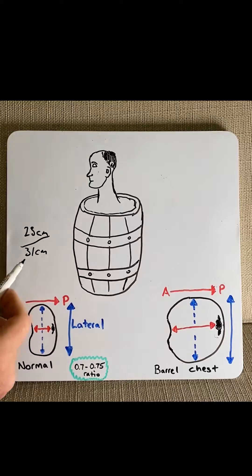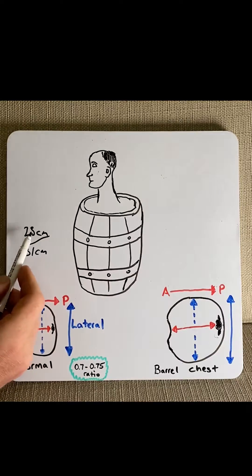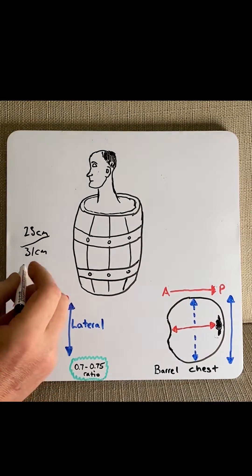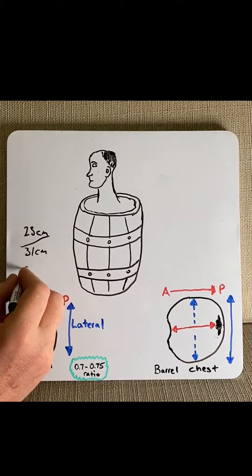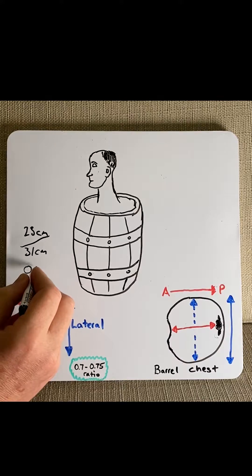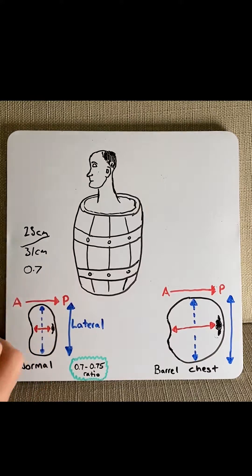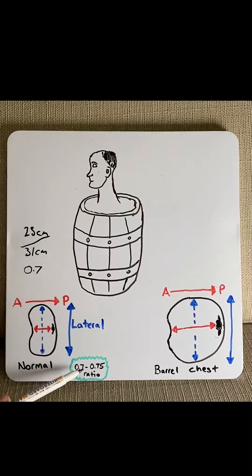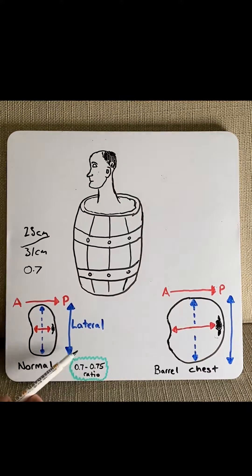If I was to do a ratio — 23 divided by 31 — this would give me 0.74. The normal ratio of the adult chest is between 0.7 to 0.75.